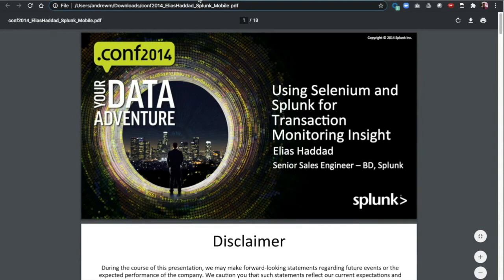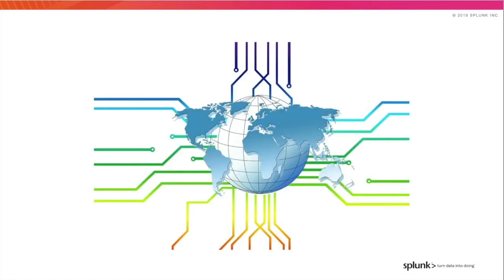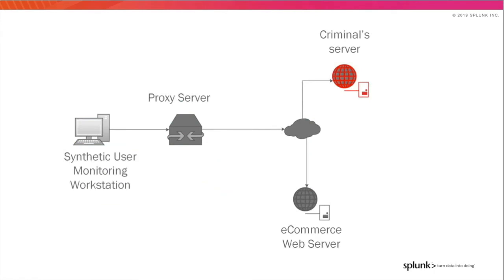Synthetic user monitoring should catch JavaScript running in ways we don't expect, but the bad guys are always devising new tactics to hide their behavior. So there is one more thing that we can do in this area to catch the criminal. Remember that the attacker has to get the data off the customer machine. So this workstation that mimics user behavior will be making connections to unexpected places in order to deliver their stolen data. In the security space, we like to say the network doesn't lie. So even if this behavior is missed by synthetic user monitoring tools, network monitoring will see outbound connections from the workstation performing the synthetic user monitoring. Your proxy server will log these outbound connections, but you should ensure that you are watching for this unexpected traffic that originates from the synthetic user monitoring workstation.